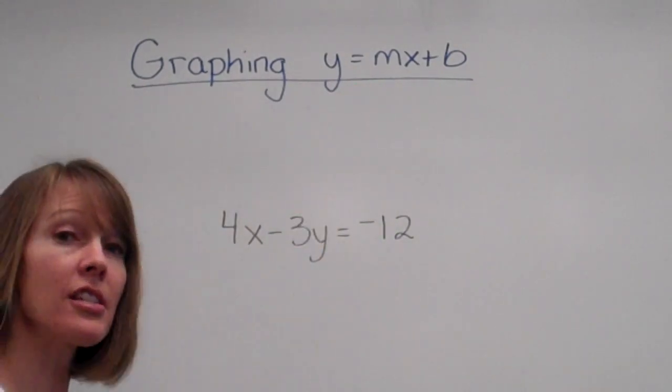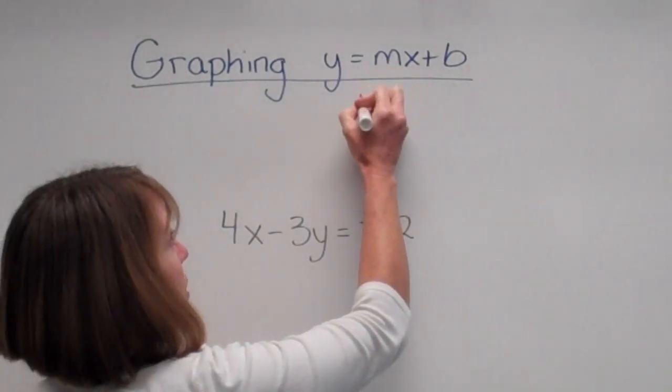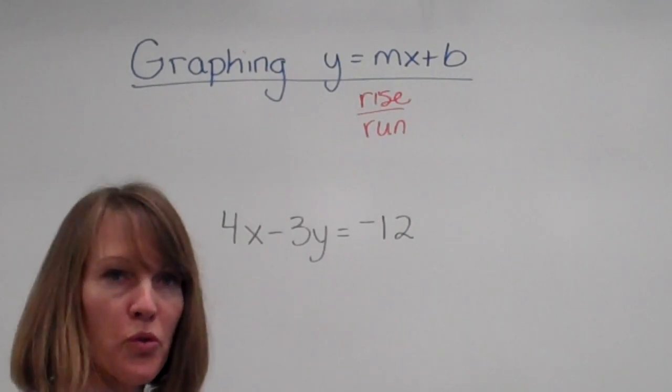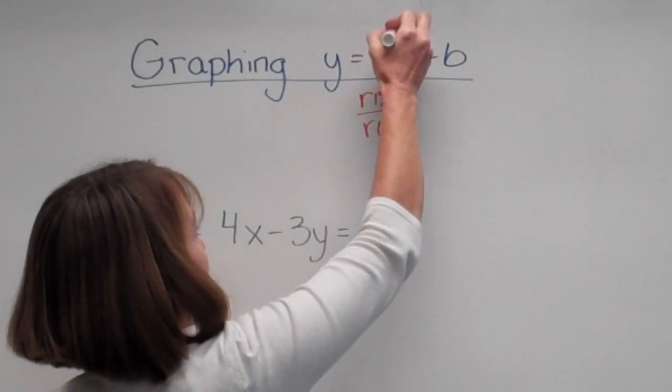m stands for our slope, which is our rise over our run. And it tells us where to move. So m stands for move.